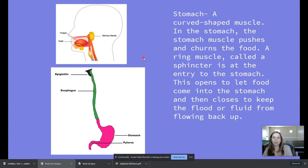That's a curved shaped muscle. Yes, your stomach is a muscle. In the stomach, the stomach muscle pushes and churns the food. A ring muscle called a sphincter is at the entry to the stomach. This opens to let food come into the stomach and then closes to keep the food or fluid from flowing back up.